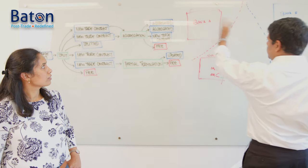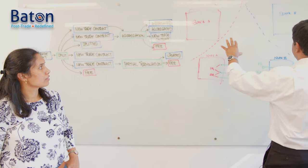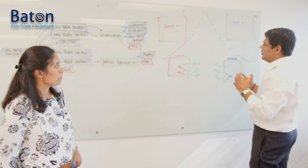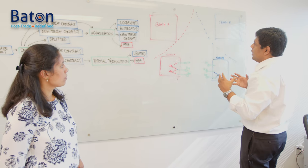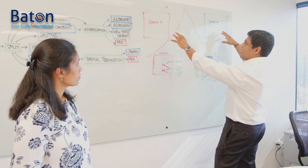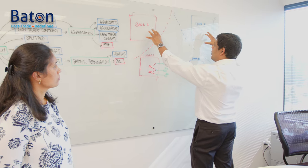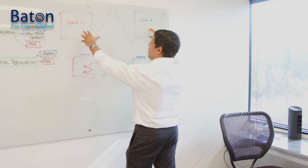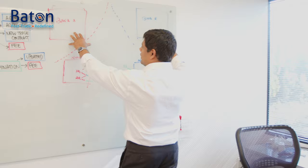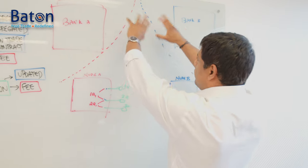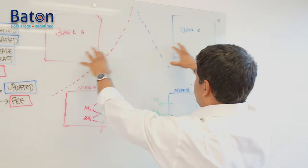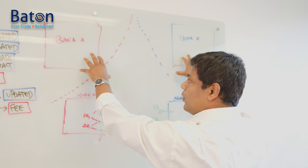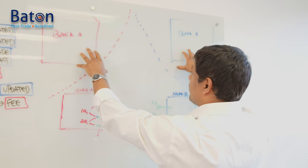Let me explain that with a diagram. Think about two banks, Bank A and Bank B, and a transaction they are doing. This could be a trade, a payment obligation, or a swap they've executed. After the trade is done, they have to interact and execute a business workflow across two different banks.